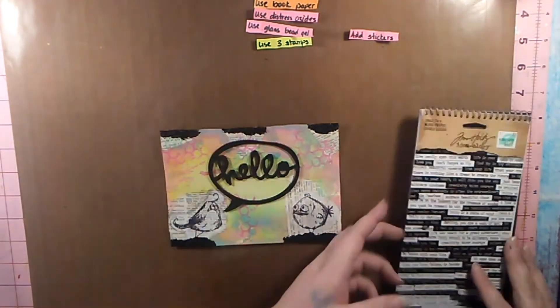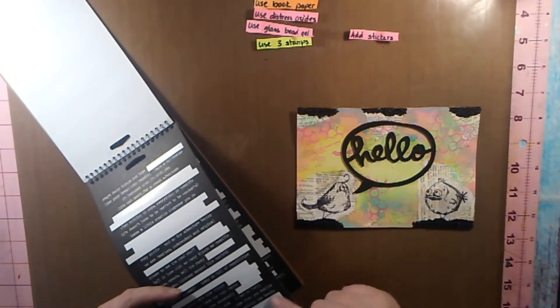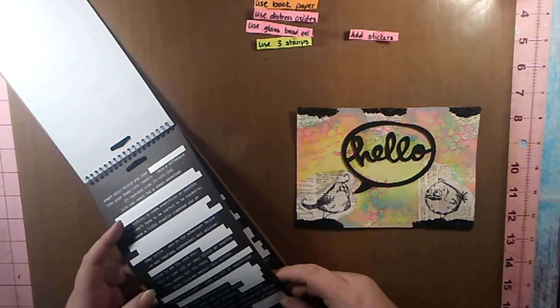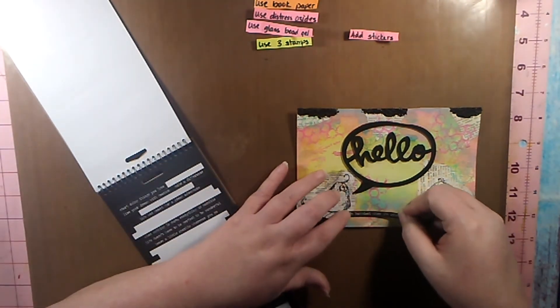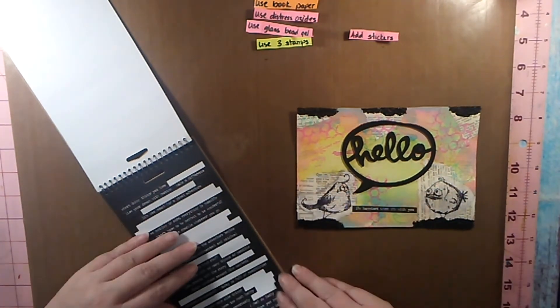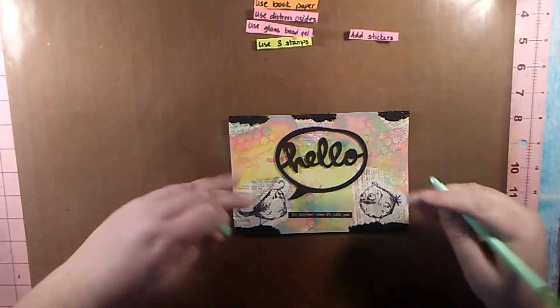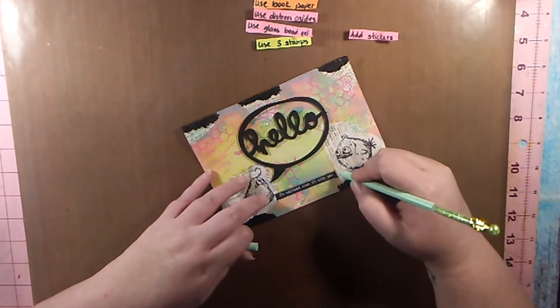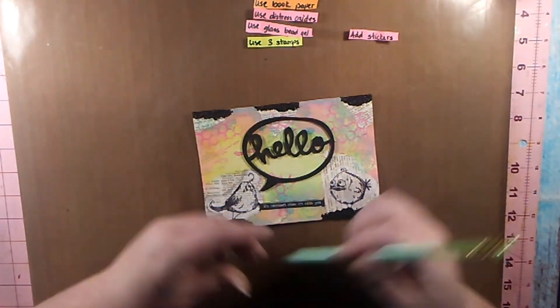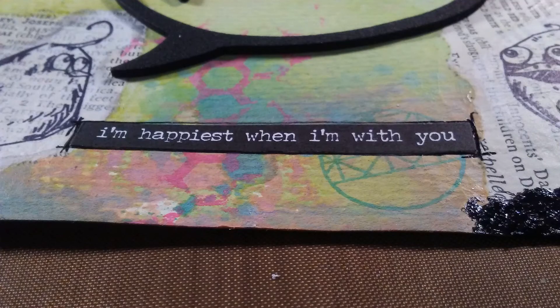I do choose some of the Tim Holtz small talk stickers and add those to the page. Then I go around that with my little gel pen, and I believe that will finish up the project. I've added some photos at the end. I hope you all have enjoyed this. Be sure to let me know in the comments if you guys are enjoying these Pick 5s, and I will talk to you later. Bye!